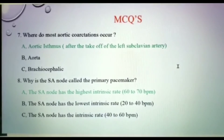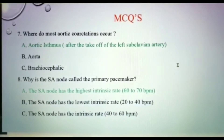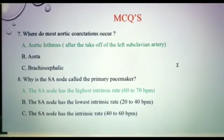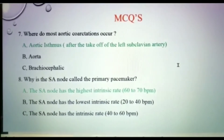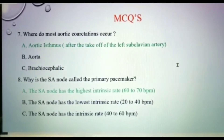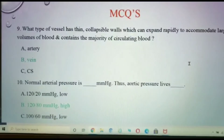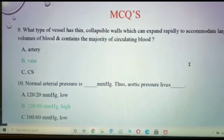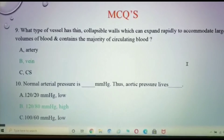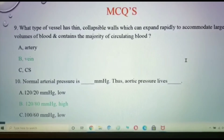Next: why is the sinoatrial node, or SA node, called the primary pacemaker? The SA node has the highest intrinsic rate, which may be 60 to 100 beats per minute.